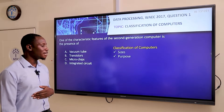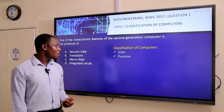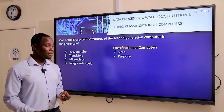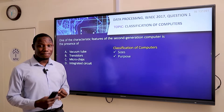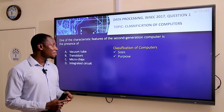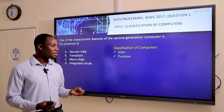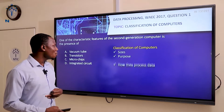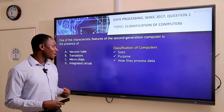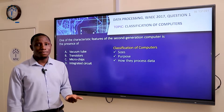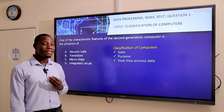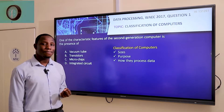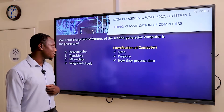Next we have classification of computers based on purpose. Under this we have two types: the general purpose computer, an example being the personal computer, and the specific purpose computer, an example being the traffic light or ATM machine. We also have classification based on how computers process data, giving us digital, analog, and hybrid computers.